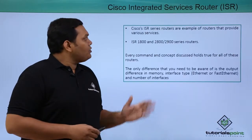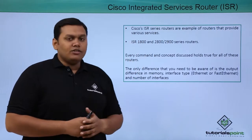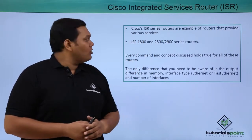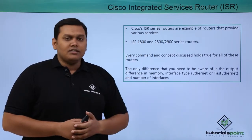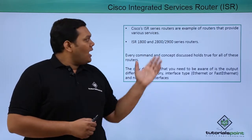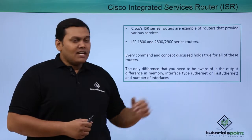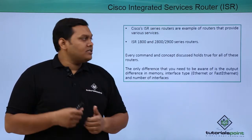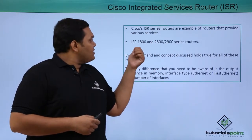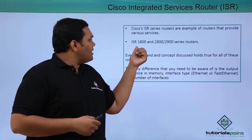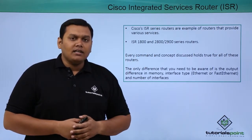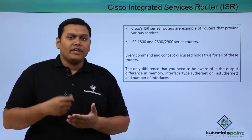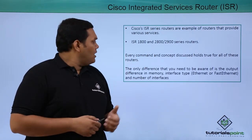Coming to the ISR series of Cisco routers — the Cisco ISR series routers are the best example of routers that provide various services. Mainly the ISR 1800, 2800 and 2900 series provide a wide range of services.